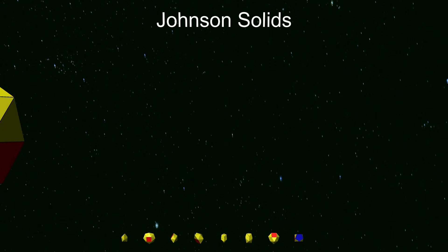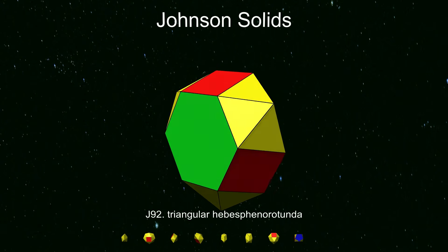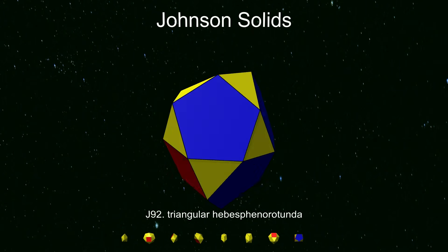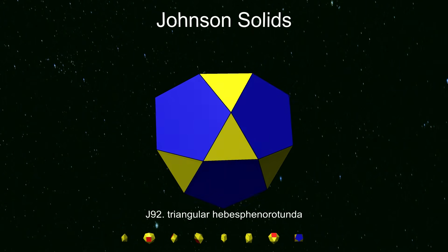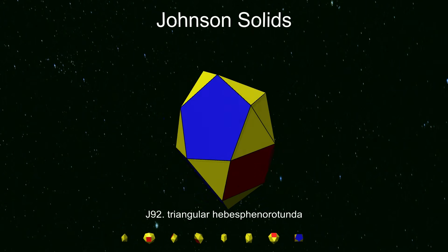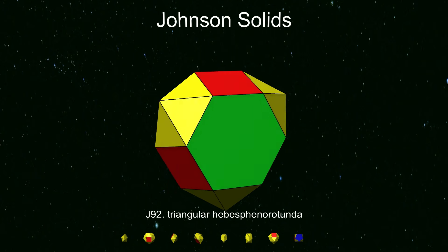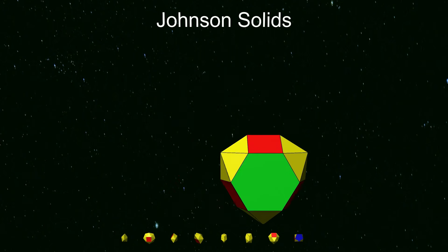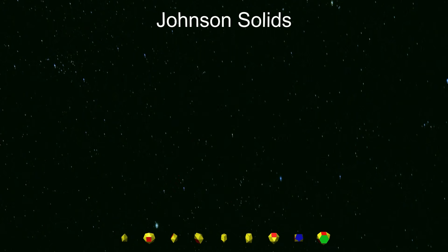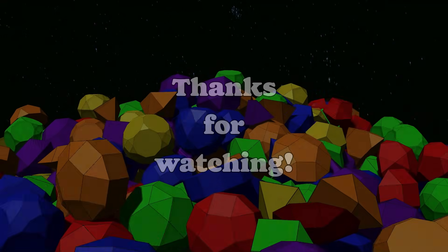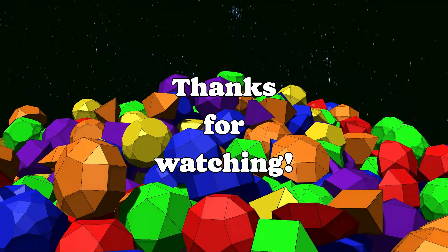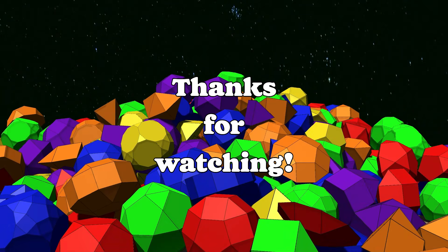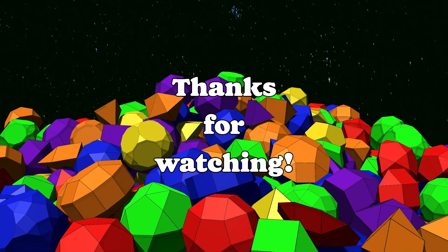And finally, Johnson solid number 92 is the triangular hebesphenorotunda, with a larger section of pentagonal rotunda on one side and a hexagon on the other. That's it for this video. Please consider giving it a like if you enjoyed it, and see you next time.